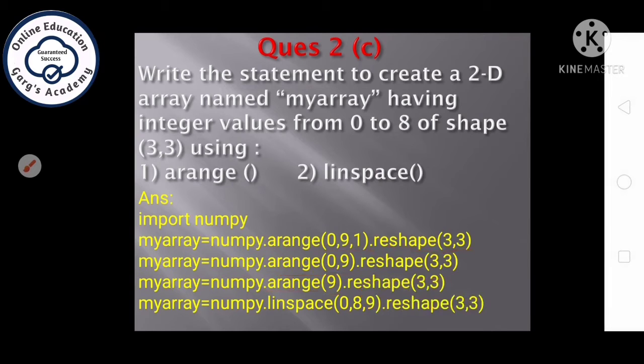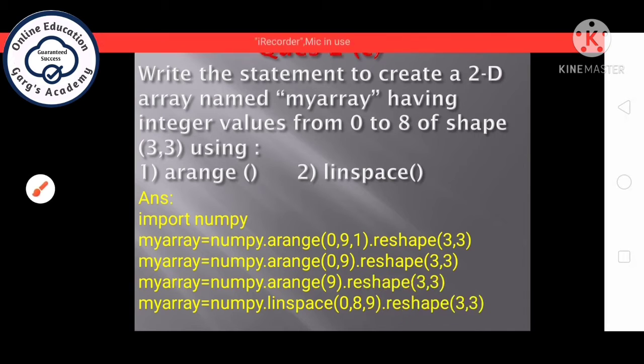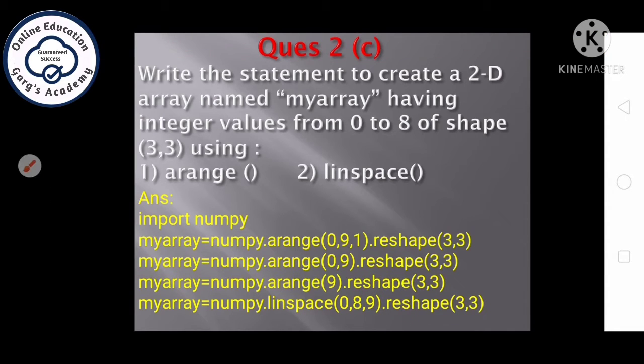Now let's see the linspace function, how it will work. It will work in this way, means it will take 3 arguments, 0, 8, 9, means you have to take 9 values between 0 to 8 which are linearly spaced. Next, after creating the array, again we will reshape it using the reshape function.